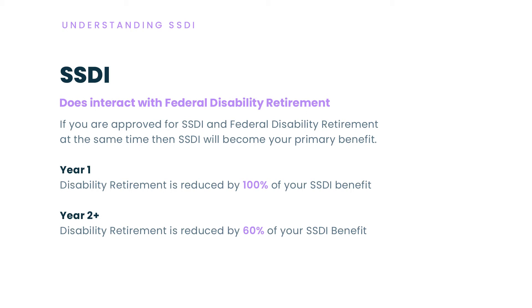Social Security Disability and disability retirement have an offset, and it's a confusing one. The first year you're receiving both benefits, your disability retirement annuity is reduced by 100% of the amount of your Social Security disability payment. Year two, and each year after that, your disability retirement annuity is reduced by 60% of your Social Security disability benefit. So that first year on both benefits, it feels like you're just getting your Social Security disability. Every year after that, you get a reduced disability retirement plus the full Social Security disability amount.